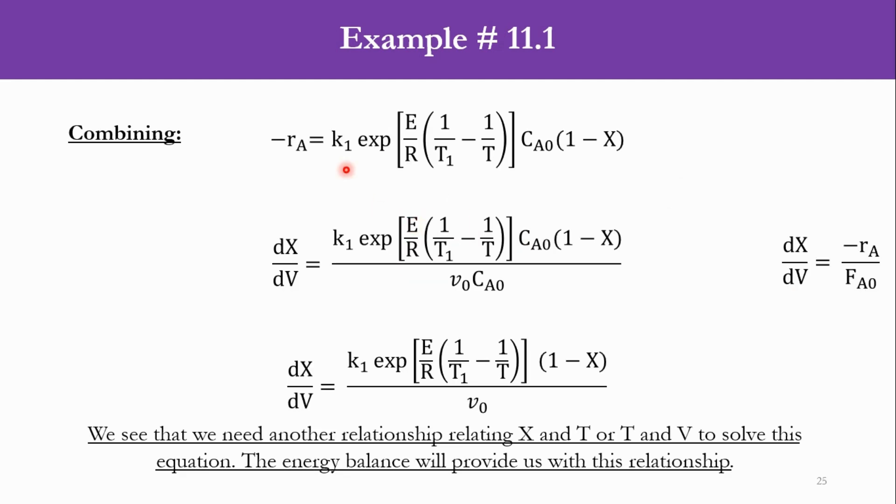k is replaced by k1·exp[E/R(1/T1 - 1/T)]·CA0(1 - X). For the equation dX/dV = -rA/FA0, -rA is replaced by this factor and FA0 is substituted as v0·CA0. The CA0 cancels out and we get dX/dV = k1·exp[E/R(1/T1 - 1/T)]·(1 - X)/v0.